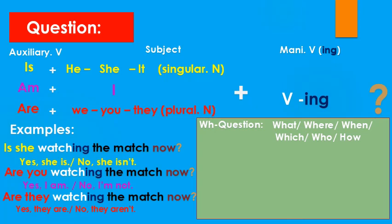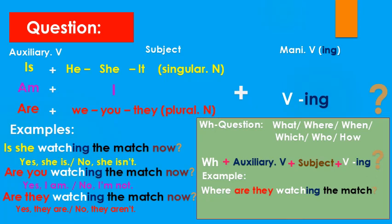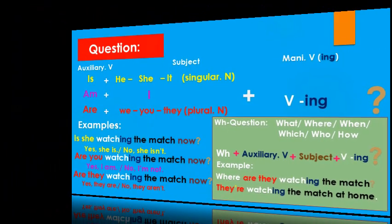Now let's move to the WH question, using what, where, when, which, who, and how. The structure is the same — auxiliary verb, subject, then verb with -ing — but we put the WH word at the beginning, followed by a question mark. For example: 'Where are they watching the match?' The answer is a full sentence: 'They're watching the match at home.'